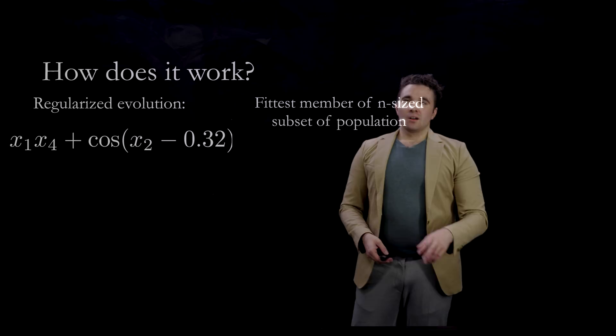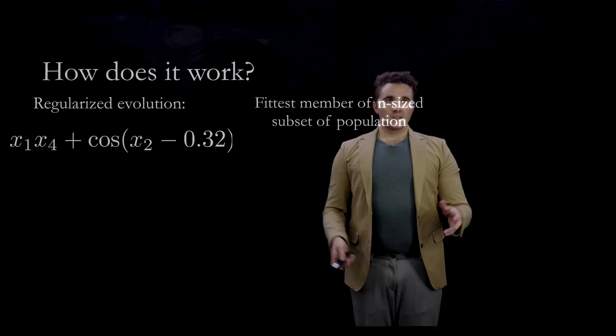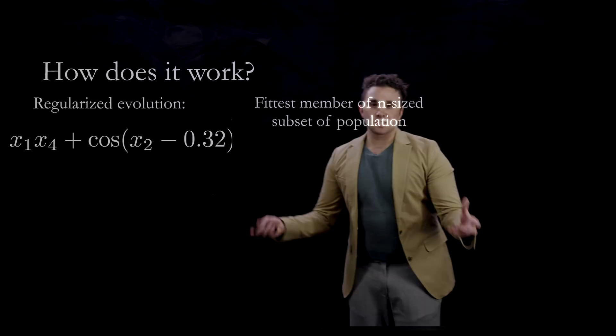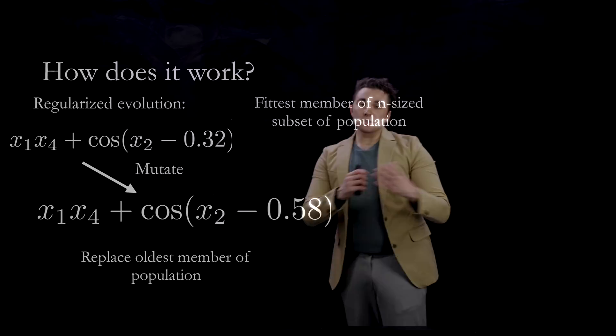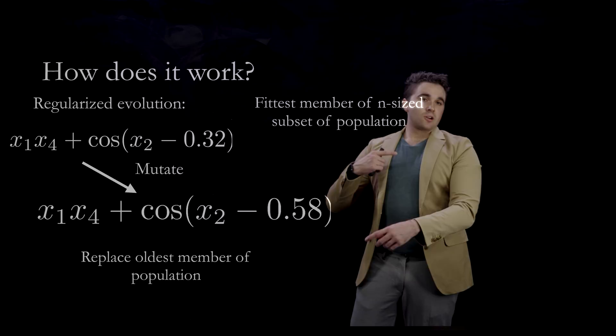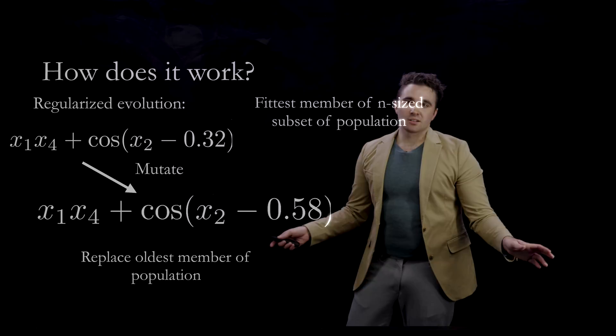I use regularized evolution in my PySR package. You fit a small subsample of a population of equations, find the fittest member — the equation that best fits your data — and mutate it. You look for the oldest member of your population and replace it with this new expression, repeating this thousands of times. This more efficiently explores equation space than a brute-force search.